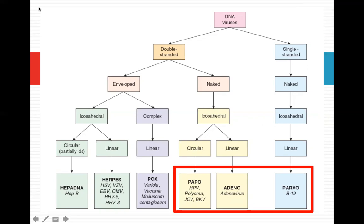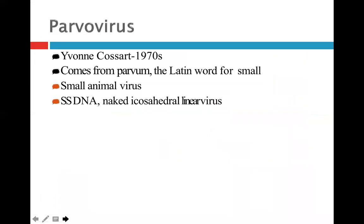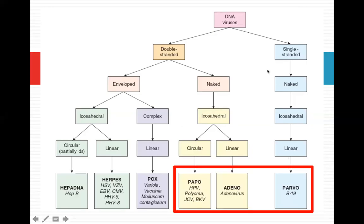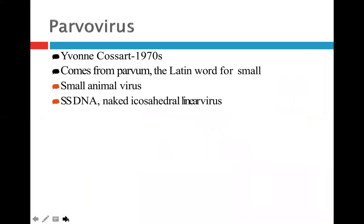Let's start with the parvovirus. Parvovirus was discovered by Yvonne Cossart in the 1970s, which comes from the Latin word parvum, meaning small. This is the smallest animal virus. As mentioned, it is single-stranded DNA, naked, icosahedral, linear virus.